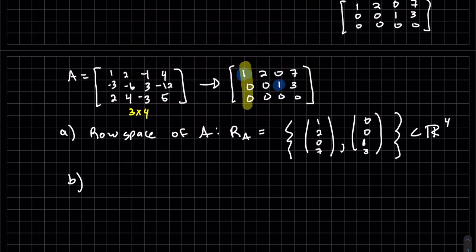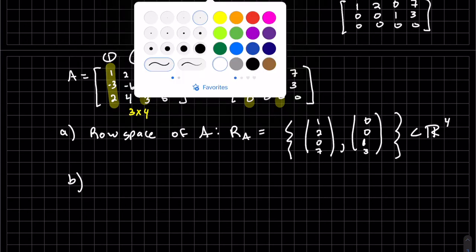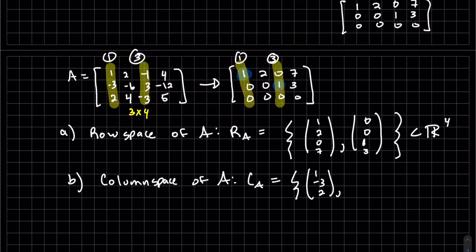Now we go back to the original pivots. Those corresponding columns are going to be used to find our column space. It has to be the corresponding columns. Columns 1 and 3, 1 and 3. And so therefore, as you can see, this is a subset of R3. But do notice there's two elements in RA and two elements in CA.